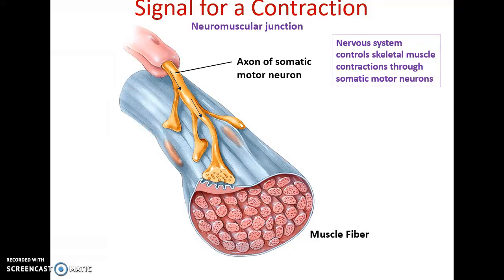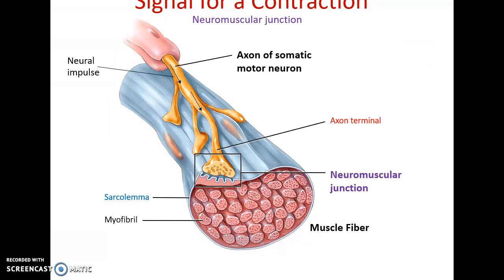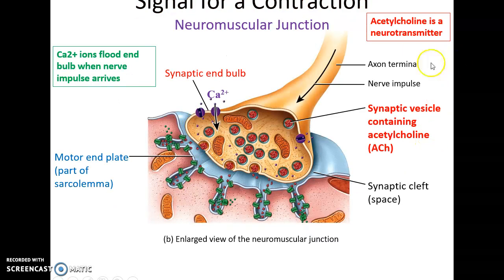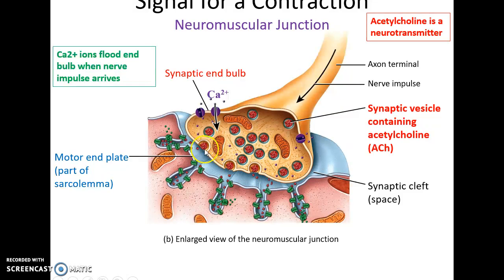The muscle fiber will only contract when it receives a stimulus from the somatic motor neuron. When a nerve impulse reaches the axon terminal of the somatic motor neuron, it arrives at what's called a neuromuscular junction. Looking closely, the nerve impulse arrives at the end of the neuron called the synaptic end bulb, which is filled with vesicles containing the neurotransmitter acetylcholine. When the impulse arrives, calcium ion channels open, allowing calcium ions to flood into the synaptic end bulb.